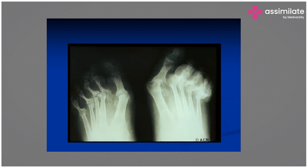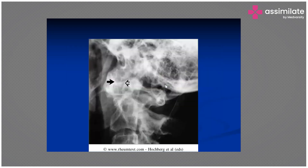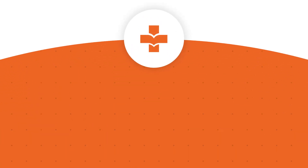Looking at the next pictures: there is subluxation of the joints. This image shows the atlanto-axial joint — there is loosening and thickening of the ligaments causing cord compression. You can see the bones compressing the cord. This is a serious complication in rheumatoid arthritis.